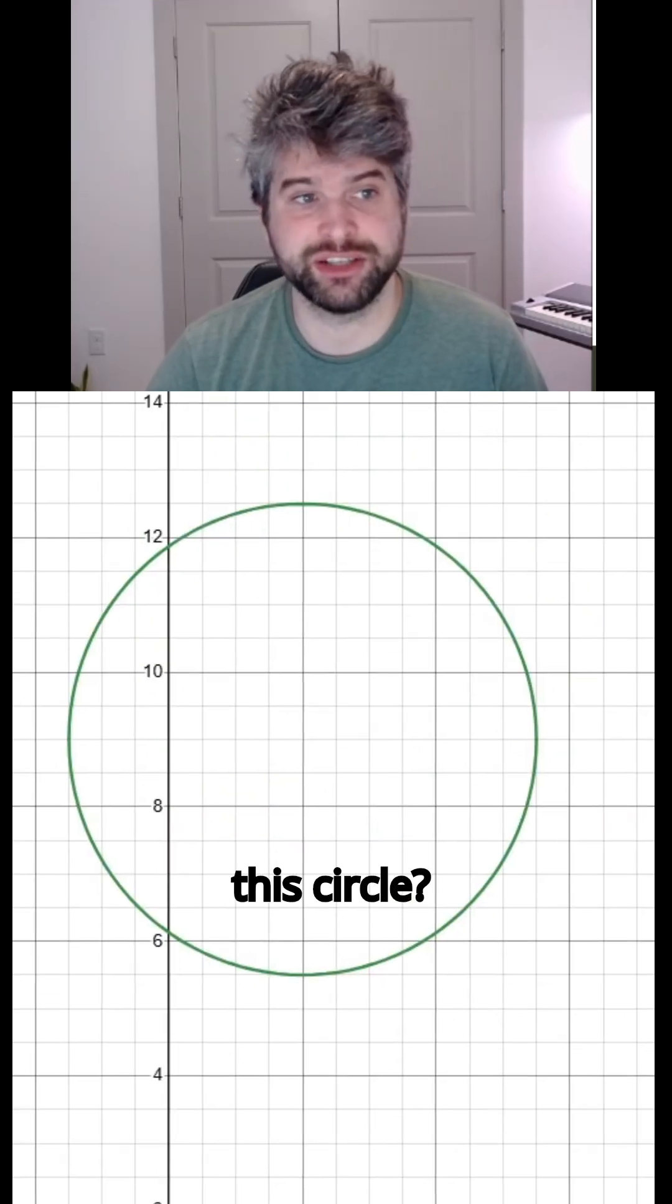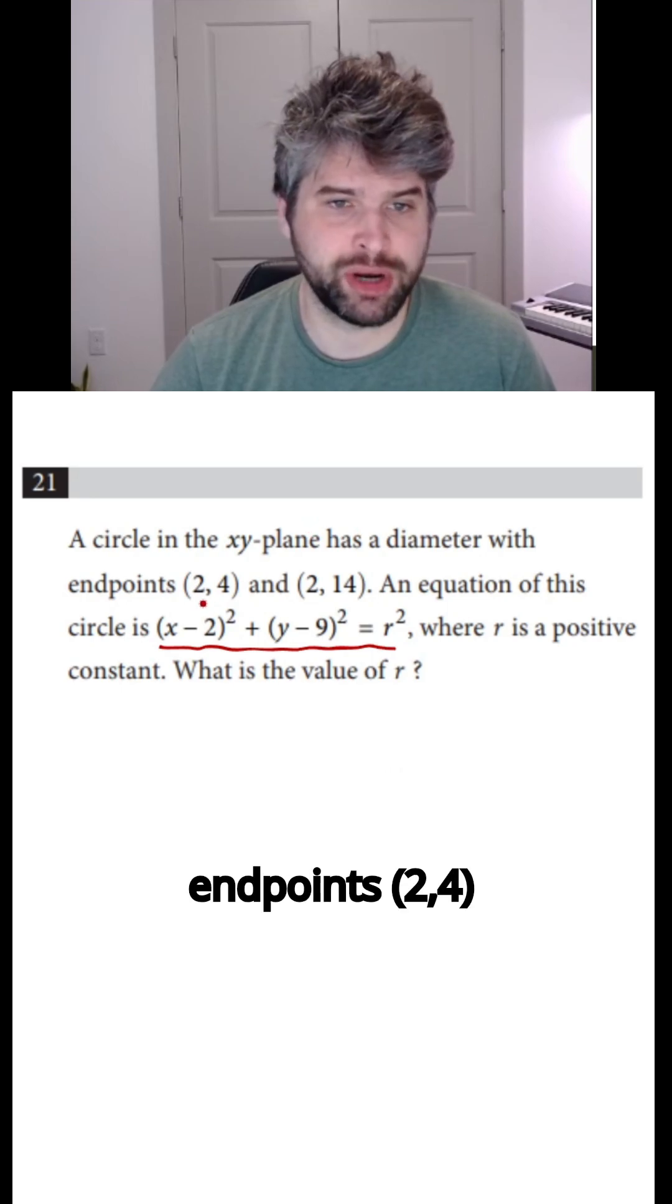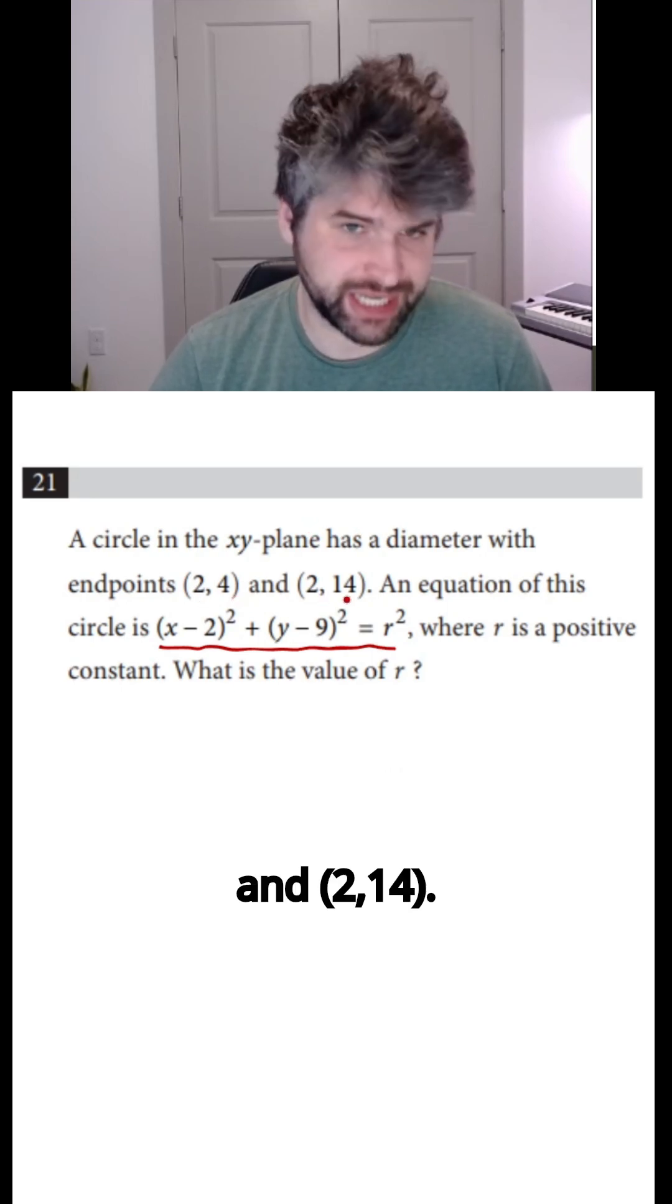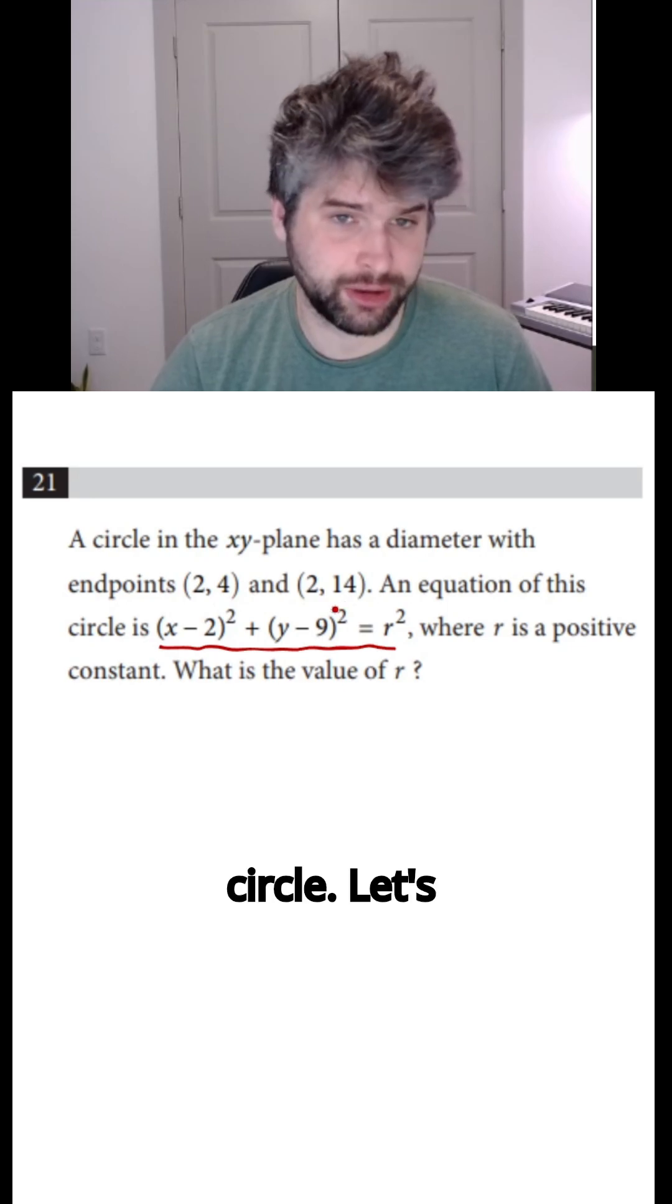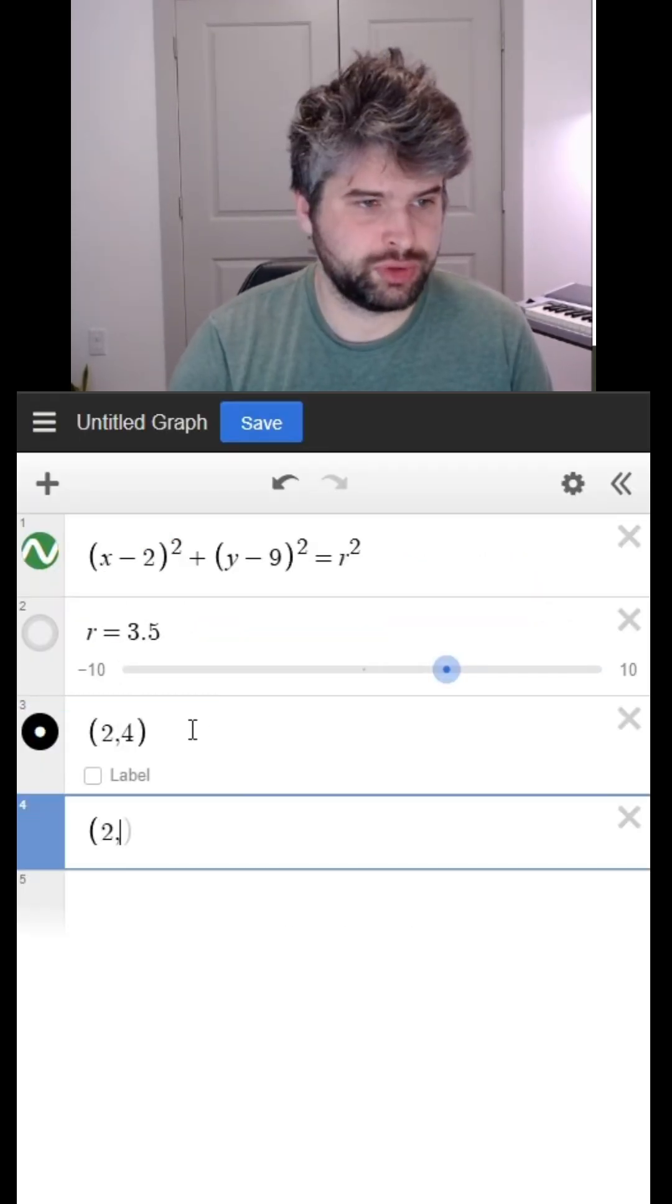Now, how big do we need to make this circle? Well, if we go back to the problem, the circle has a diameter with endpoints (2, 4) and (2, 14). So these points need to be on our circle. Let's graph them in Desmos, (2, 4), (2, 14).